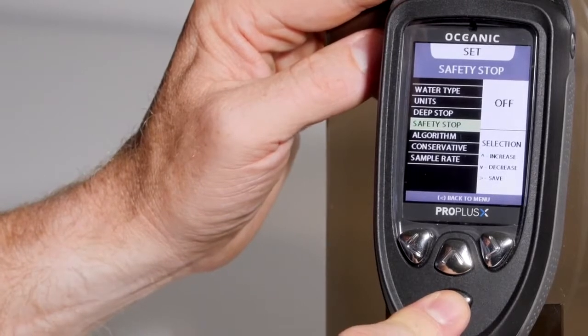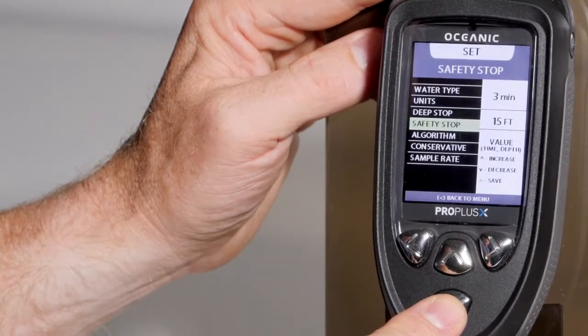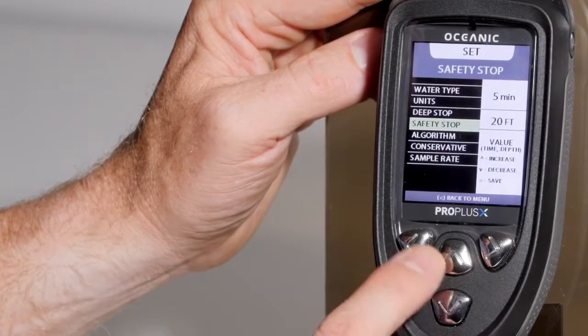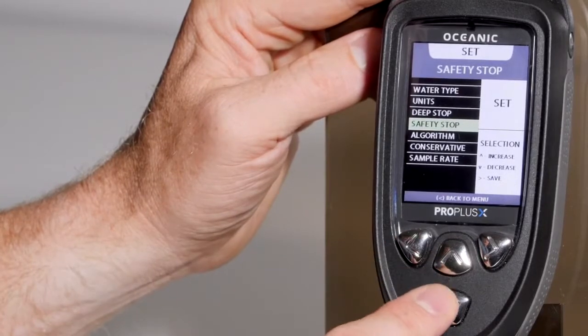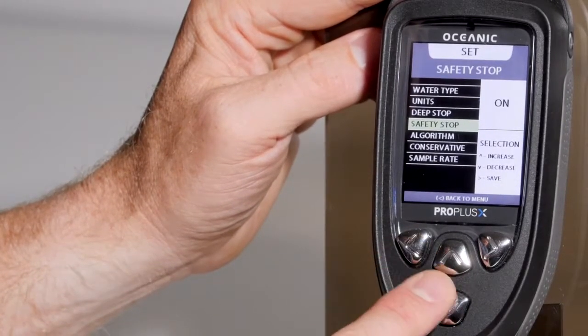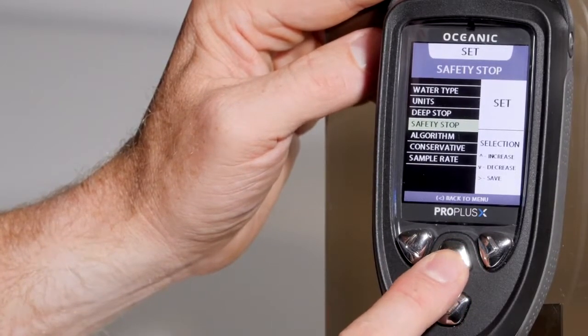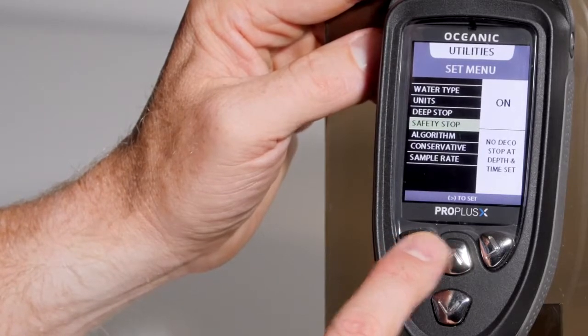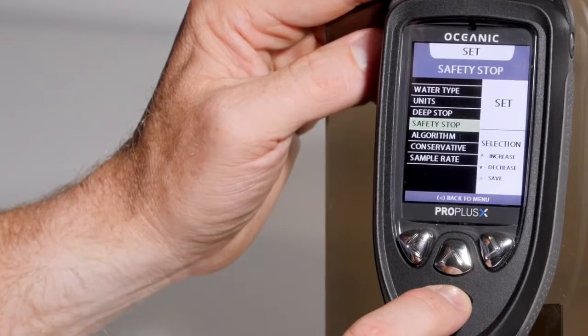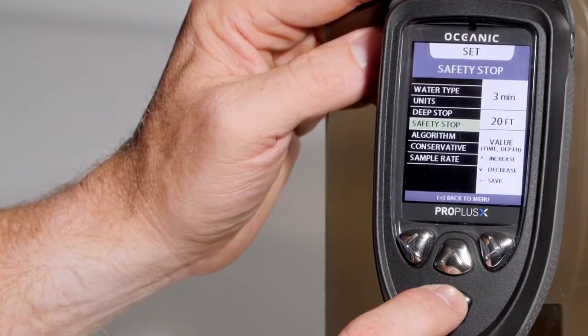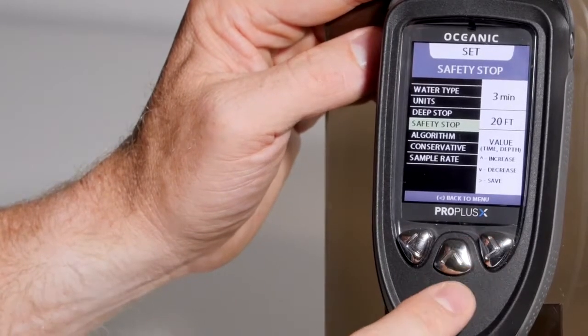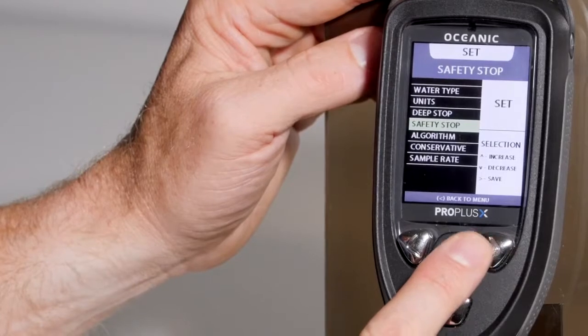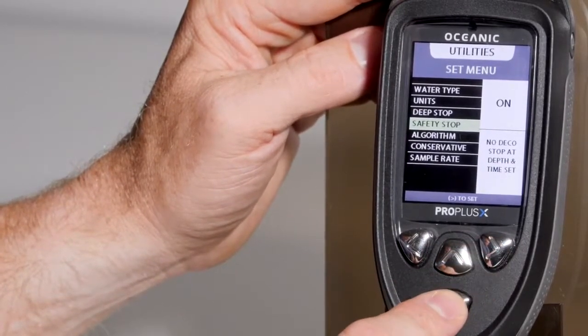Safety stops can be turned on and set. You can set the time from 3 minutes to 5 minutes. And you can set the stop depth from 10 feet, 15 feet, or 20 feet. Be sure to turn it back on or off before advancing to algorithm.